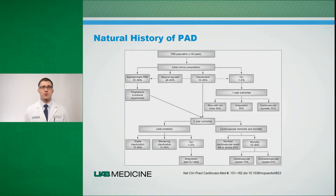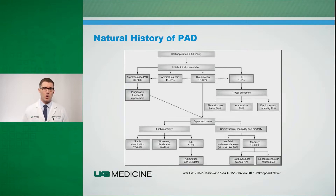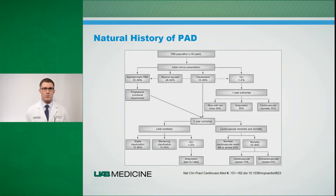The natural history of this disease is relatively dormant in most people. The vast majority of patients with a diagnosis of peripheral arterial disease will have stable symptoms at five years. However, a small portion of those patients will progress to chronic limb-threatening ischemia.